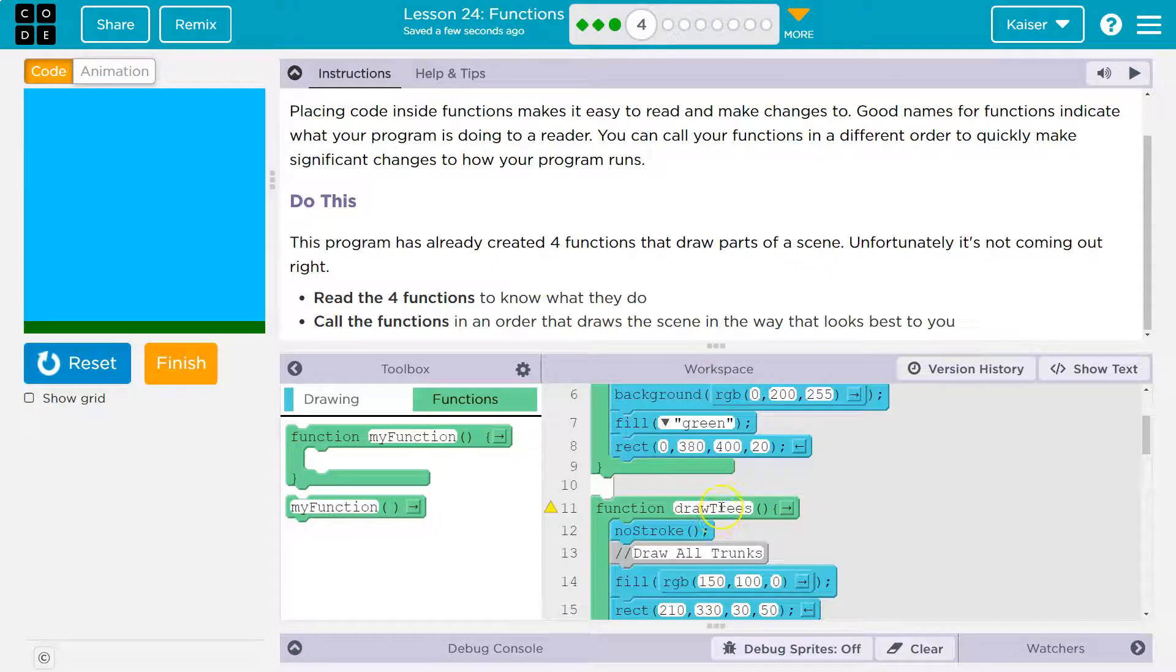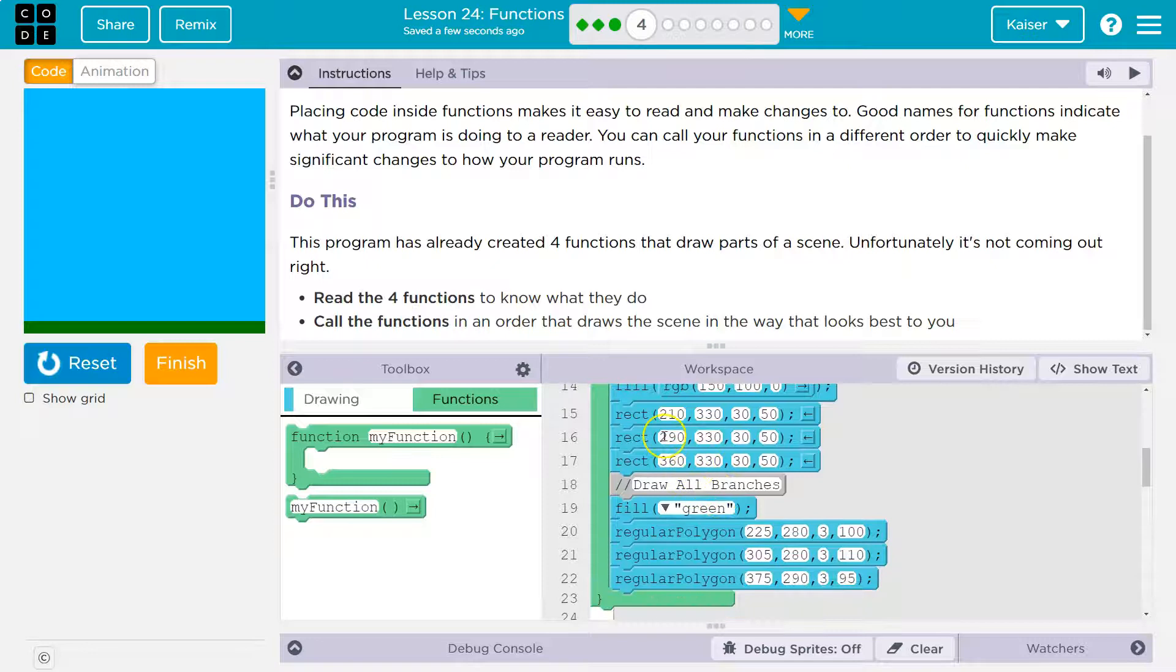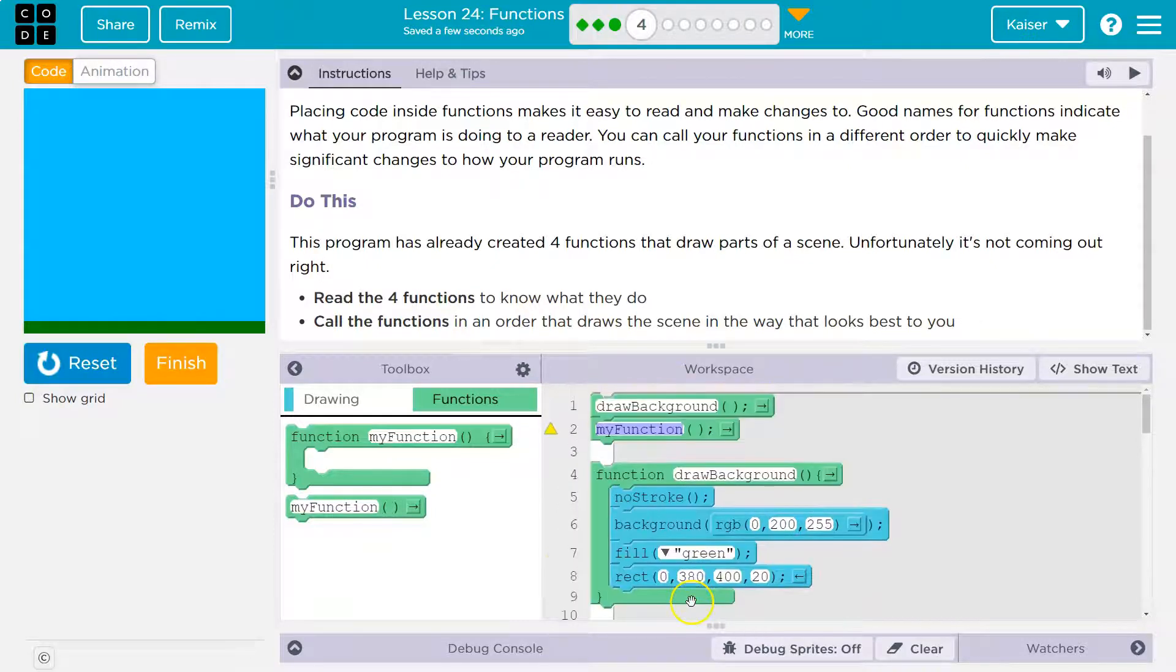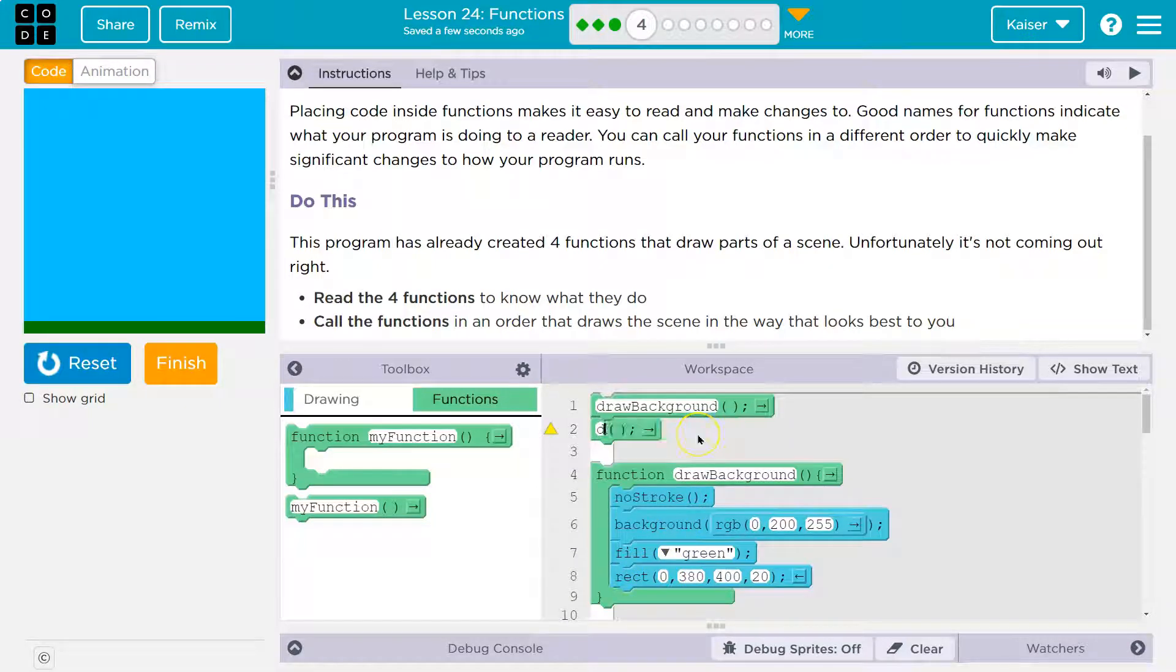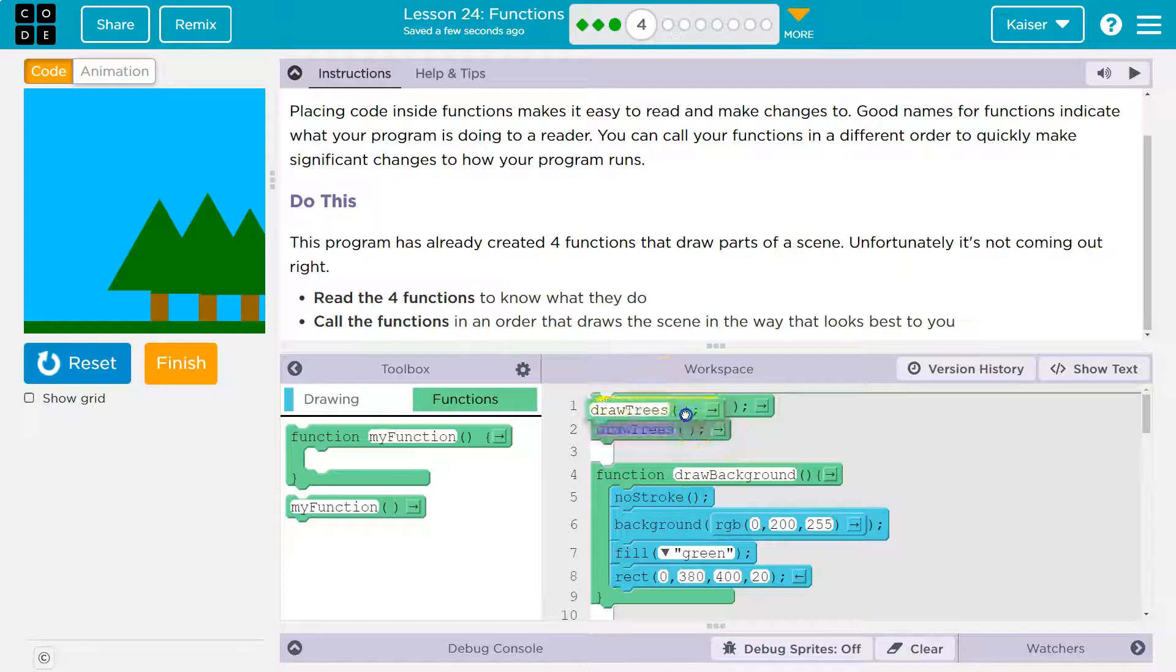The nice thing about functions is you want to have clear names. If I just stared at this code of all these rectangles, I wouldn't know what it is. But wait, this person named this block of code draw trees. I bet it draws stuff that looks like trees. Boom, and it does. And now code runs in order. So if I pull the draw trees call up here, boom, my trees are gone because the background's painted over them.